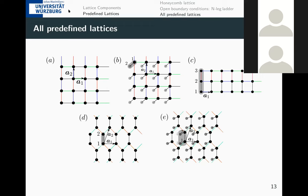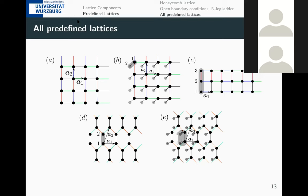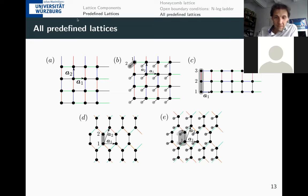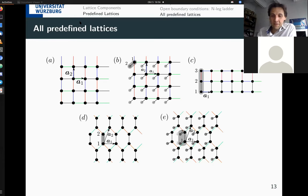Finally, here is the list of predefined lattices defined in the subroutine we provide: square lattice, bilayer square lattice, N-leg ladder, honeycomb lattice, and bilayer honeycomb lattice. That's it — are there any questions on how the lattices are defined?